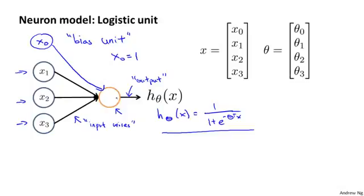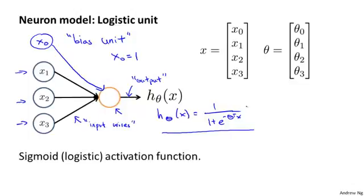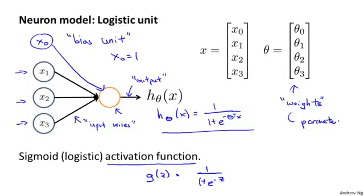Finally, one last bit of terminology. When we talk about neural networks, sometimes we'll say that this is a neuron or an artificial neuron with a sigmoid or a logistic activation function. So this activation function in neural network terminology is just another term for that function, for that nonlinearity g of z equals one over one plus e to the negative z. And whereas so far I've been calling theta the parameters of the model, I'll mostly continue to use that terminology, but sometimes you may hear others use the weights terminology.